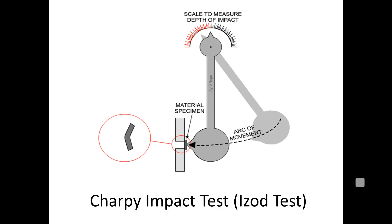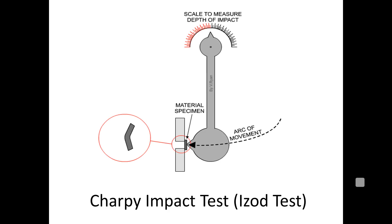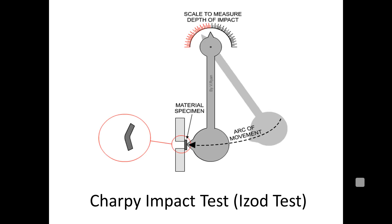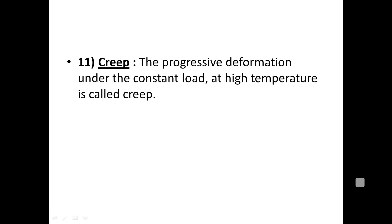This animation demonstrates the Charpy impact test, also called the Izod test. An impact load is allowed to fall on a small notched specimen, and the energy absorbed is measured. This is used to determine the toughness of a material under impact loading.